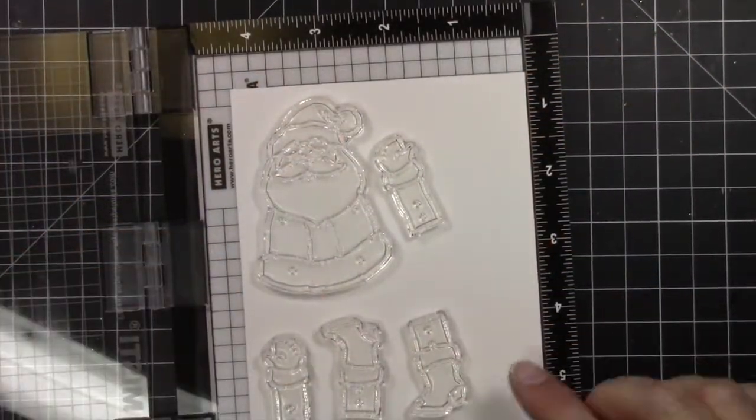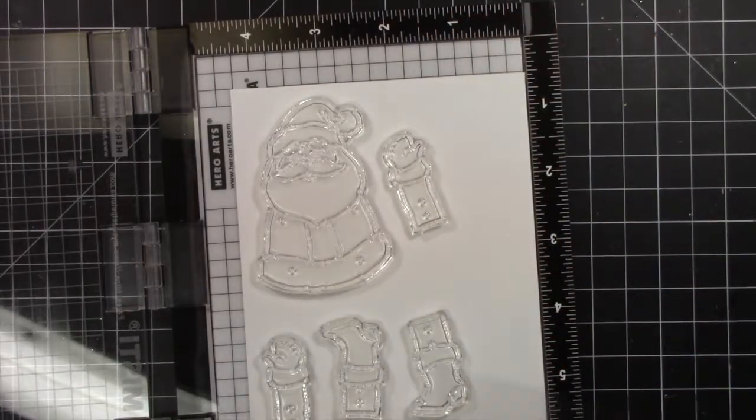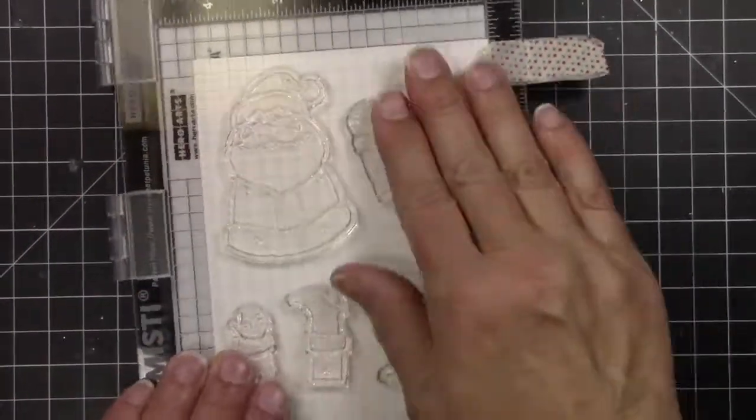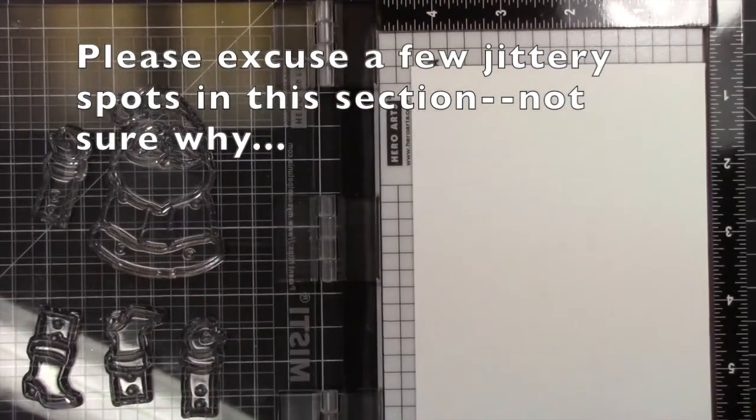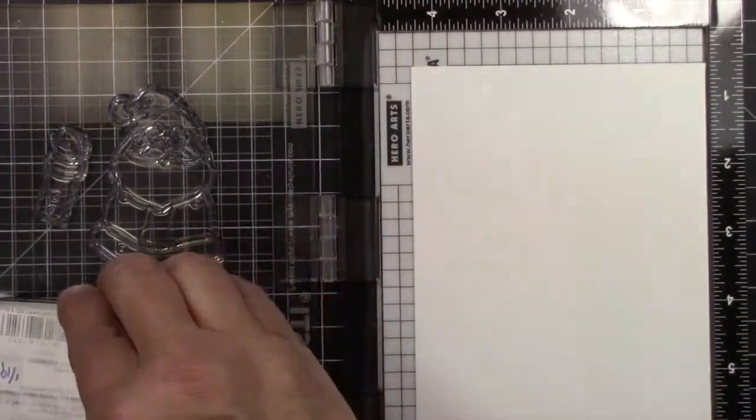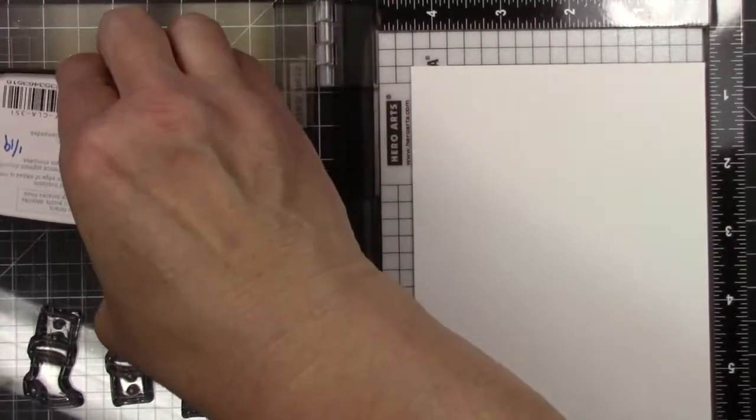I'm just going to go ahead and stamp all the parts of the Santa at once. I wanted to leave room along the right hand side because I need to cut a couple of strips for his little pull tab.